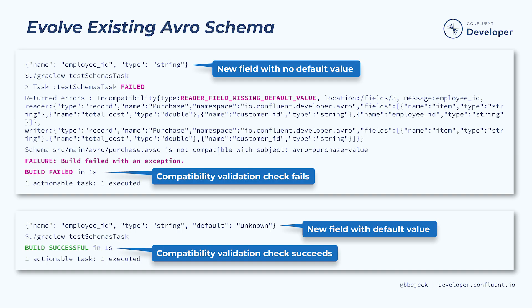Next, you'll see how to evolve the Avro schema using Gradle. Initially, you'll add a new field without a default value and see how the compatibility validation check fails. From there, you'll correctly add a default value for the new field so that the validation check succeeds.